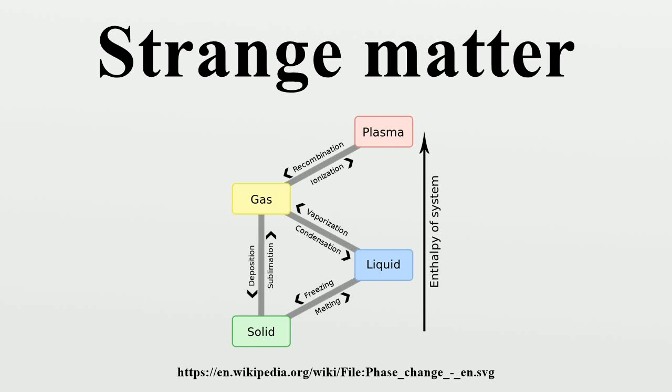Strange matter is a particular form of quark matter, usually thought of as a liquid of up, down and strange quarks. It is to be contrasted with nuclear matter, which is a liquid of neutrons and protons, and with non-strange quark matter, which is a quark liquid containing only up and down quarks.